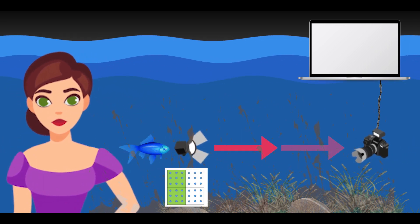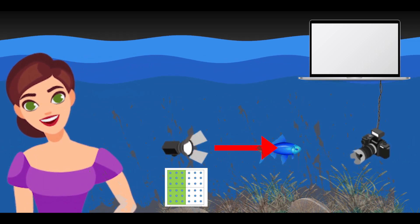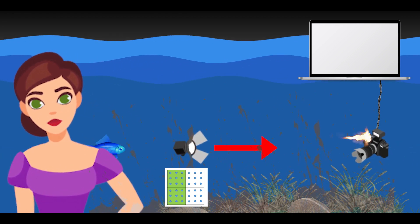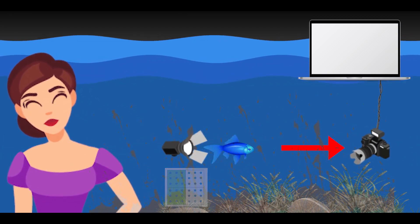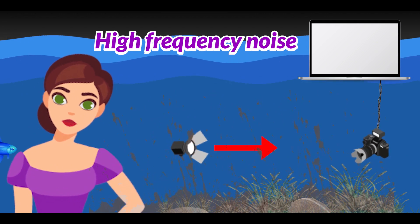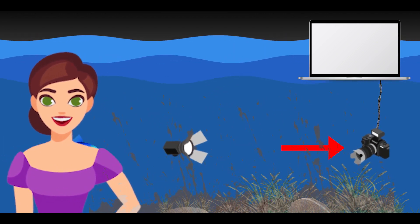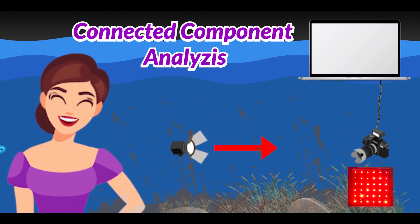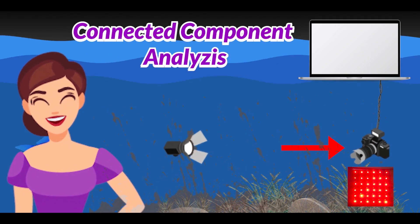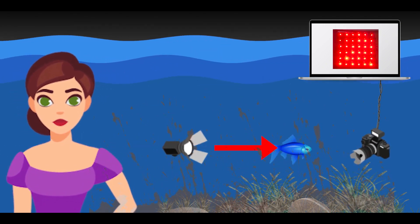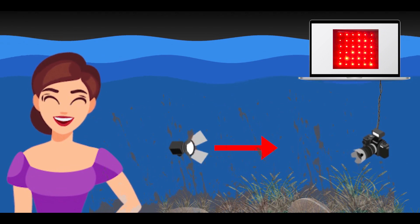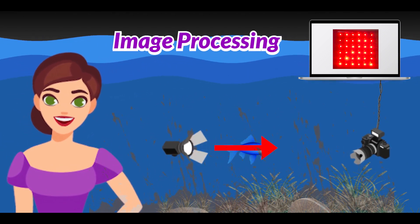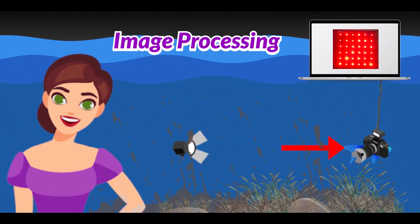These images were pre-processed by removing high frequency noise and by filtering large blobs using connected component analysis. The lighted LED bulb patterns were identified using contour detection. Machine learning and image processing algorithms were used to identify the limitations.